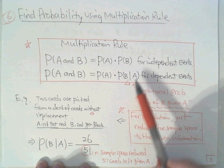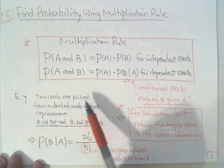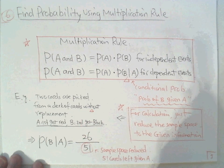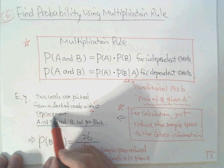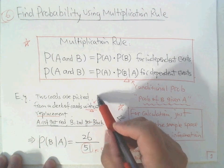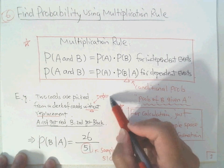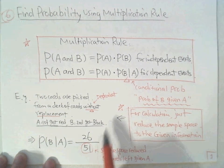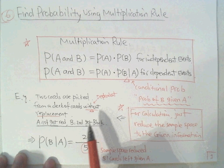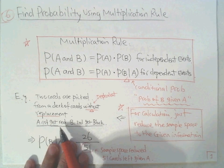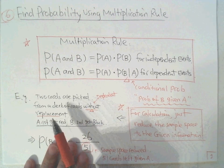Suppose we pick two cards from a deck of 52 cards without replacement. Without replacement means it's dependent — the first step will affect the second step. If the first step gets a red card, and without replacing it, then the second step you want to get a black card. This example is from the last lecture.